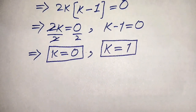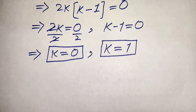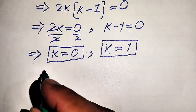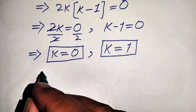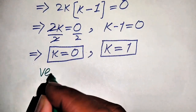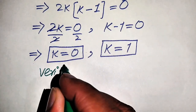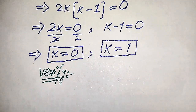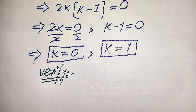So from the first method we get two values of k. In the next step we need to verify whether these two values of k are solutions or extraneous roots.